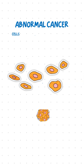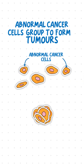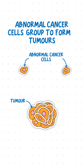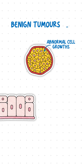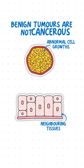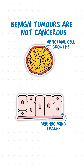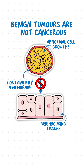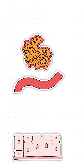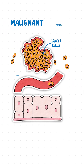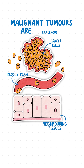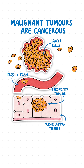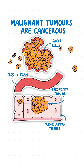These abnormal cancer cells group together to form tumors, which can be either benign or malignant. Benign tumors are not cancerous because they are abnormal cell growths contained in one area by a membrane and do not spread to neighboring tissues. On the other hand, malignant tumors are cancerous and spread through the bloodstream to neighboring tissues, forming secondary tumors.